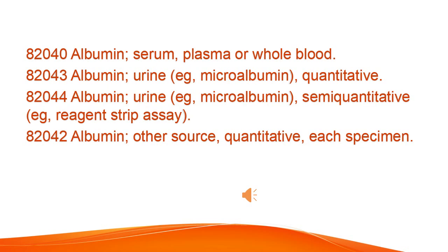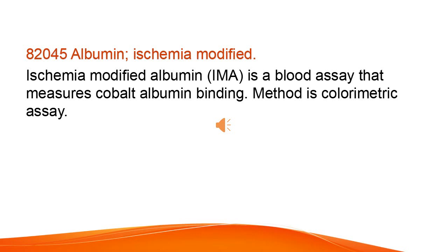Albumin: serum, plasma, or whole blood. Albumin Urine, e.g., microalbumin — quantitative and semi-quantitative (e.g., reagent strip assay). Albumin, other source — quantitative, each specimen. Ischemia-modified albumin (IMA) is a blood assay that measures cobalt-albumin binding; method is colorimetric assay.